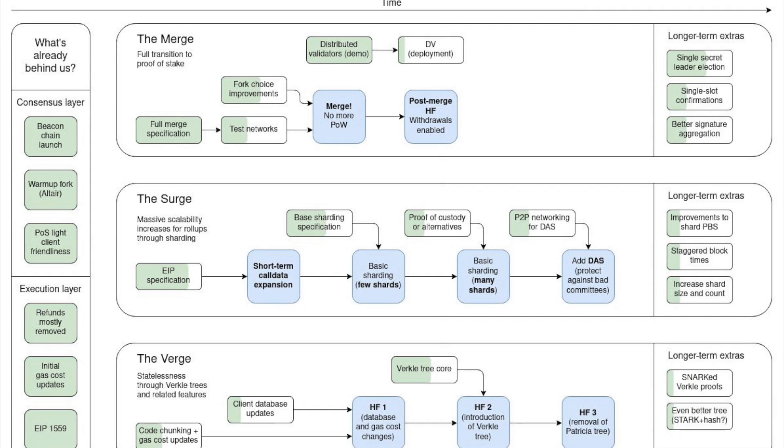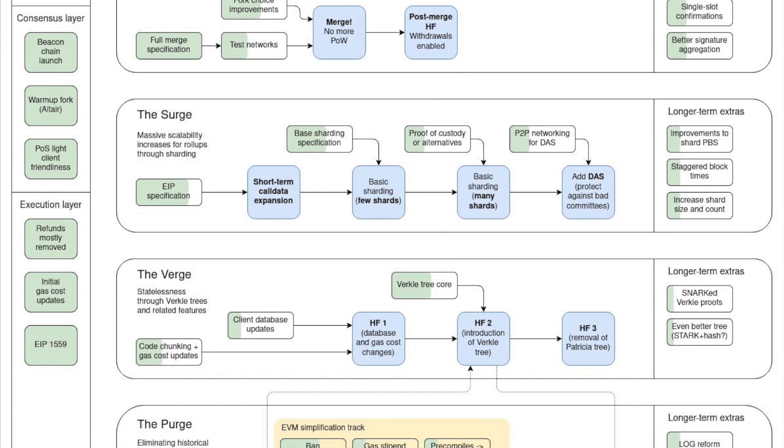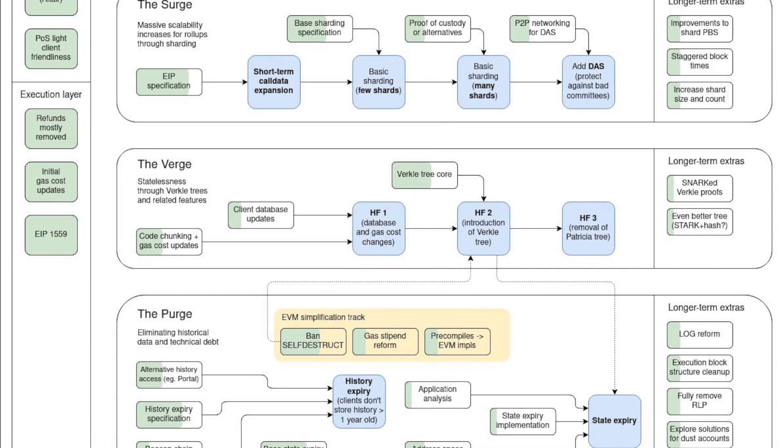Vitalik's ETH 2.0 roadmap has five main upgrades with an easy way to remember them. They are called the Merge, the Surge, the Verge, the Purge, and the Splurge.